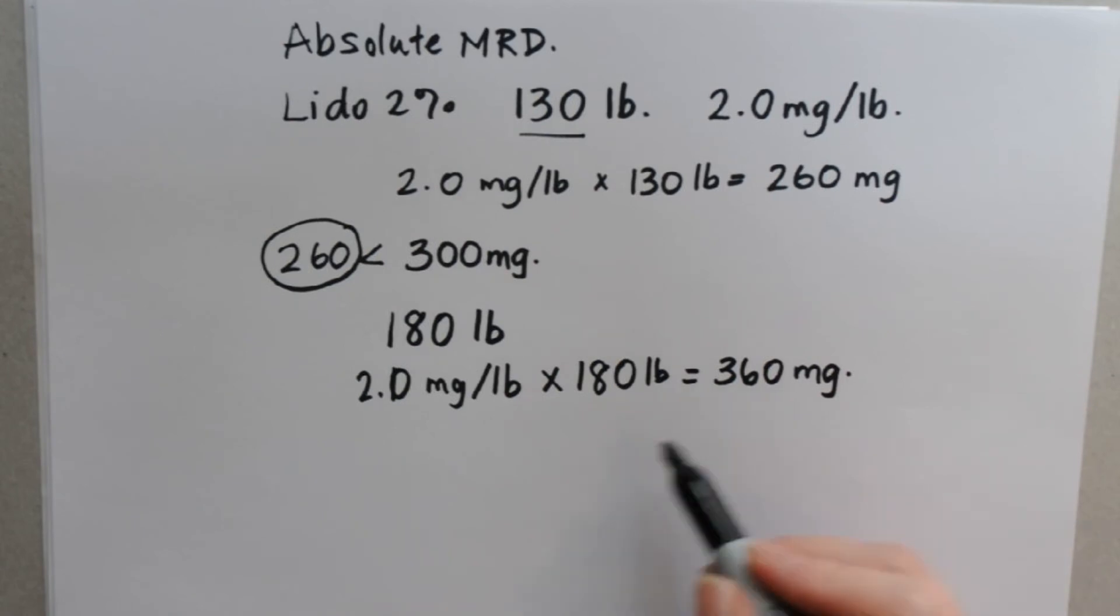So now we're going to compare that to the upper maximum dose, which I'm calling the absolute maximum dose, and we'll find that this is the lower number. So even though the calculations by weight came up with 360, because our absolute upper limit for Lido is 300, we have to use the lower number for that patient.